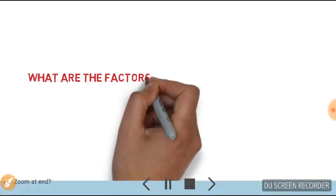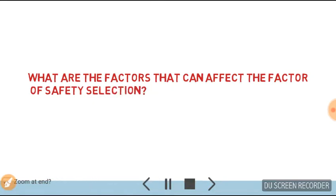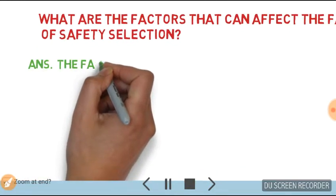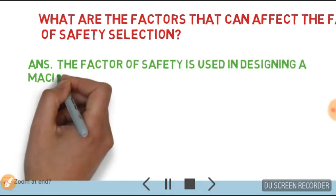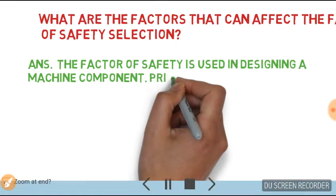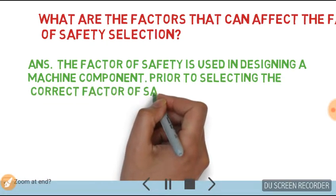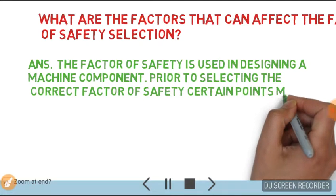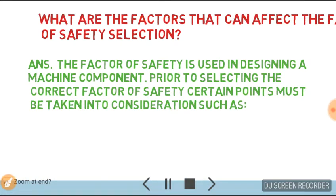Hello friends, today's question is: what are the factors that can affect the factor of safety selection? Answer: the factor of safety is used in designing a machine component. Prior to selecting the correct factor of safety, certain points must be taken into consideration, such as: